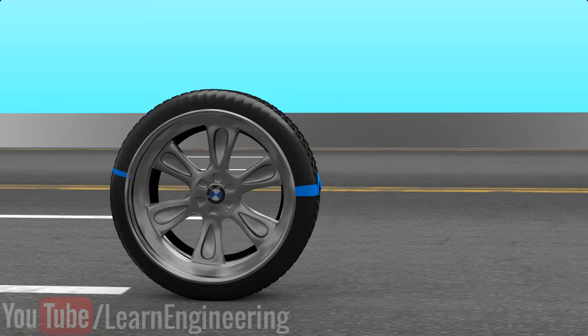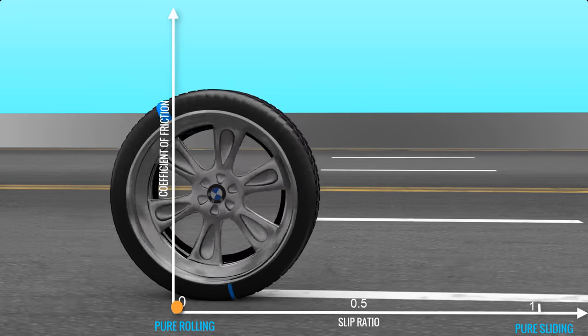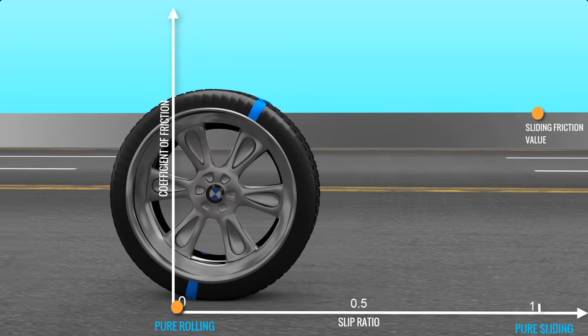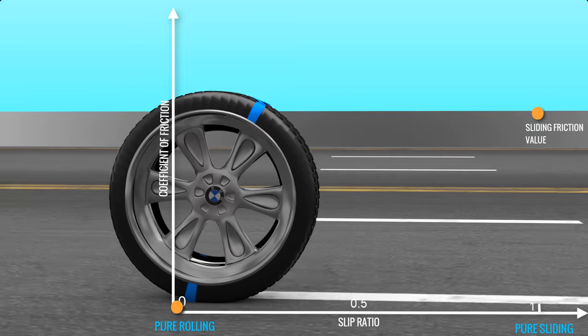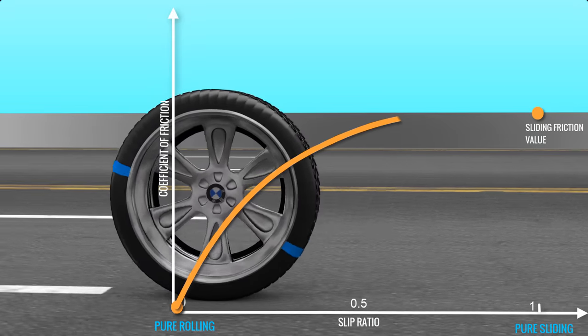In perfect rolling conditions, the value of the frictional coefficient is nearly zero. However, when the wheel is 100% slipping, sliding friction comes into play. You can expect the frictional values for other levels of slippage to vary like this.